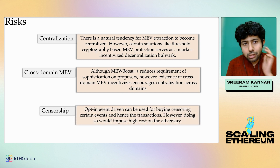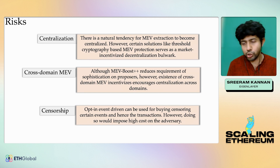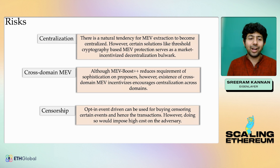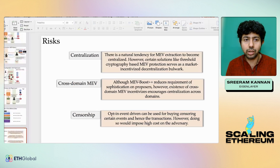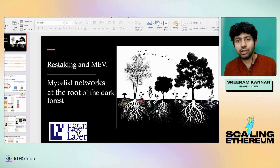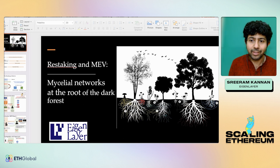Finally, there is the risk of potentially building censorship markets on something like EigenLayer. This is something we can only address through social vigilance and social consensus. So that's a high-level tour — there are interesting intersections between EigenLayer or general restaking and MEV, and I look forward to discussing further. Thank you.